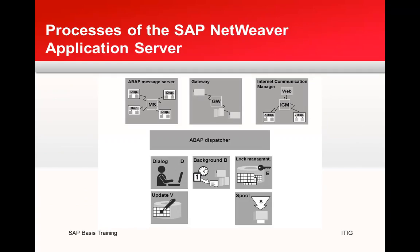Now let's look at the processes for SAP NetWeaver Application Server. On the extreme left is the message server; at the center is a gateway; on the extreme right is the ICM — Internet Communication Manager. The message server sends requests to the ABAP dispatcher, which has dialog work processes for handling user requests, background processes, and lock management via the enqueue work process.